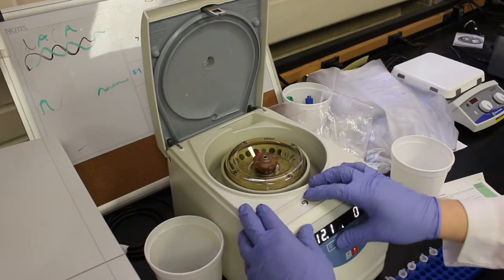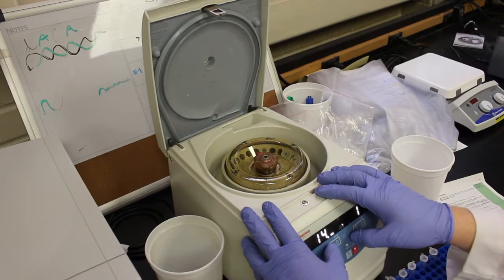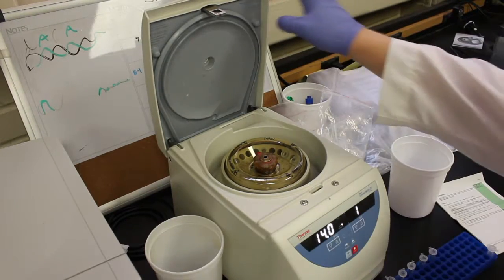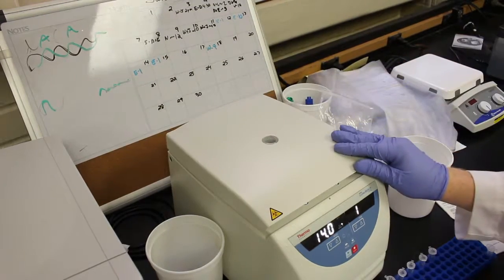Centrifuges also typically come with internal covers, as you see in the video. This is to ensure that no tube can eject from the center area and further damage the machine in case of emergency.